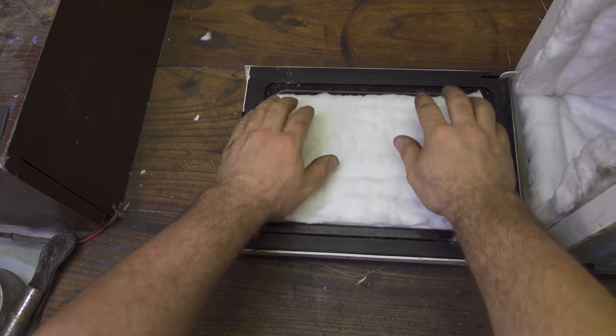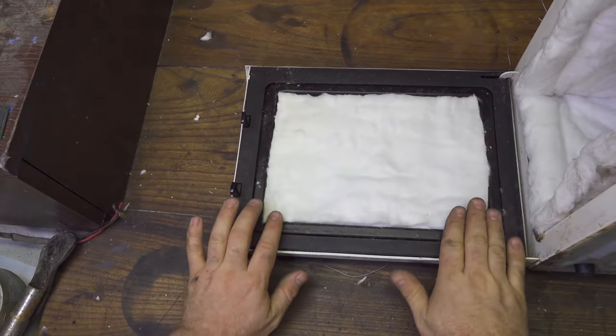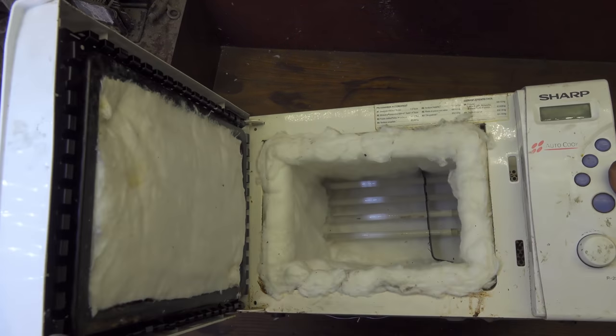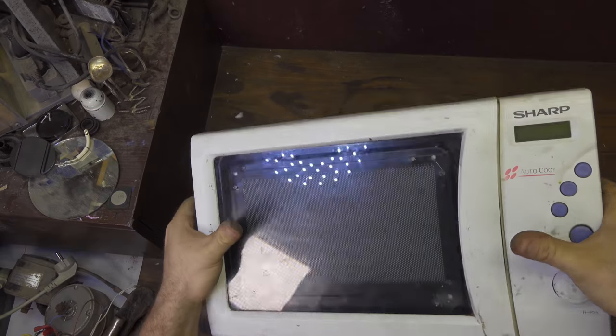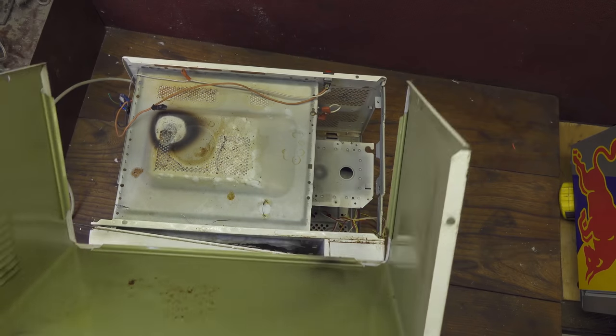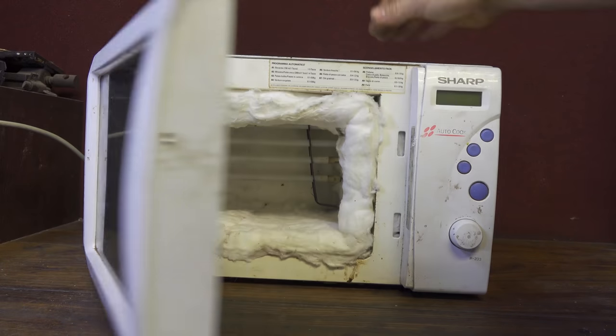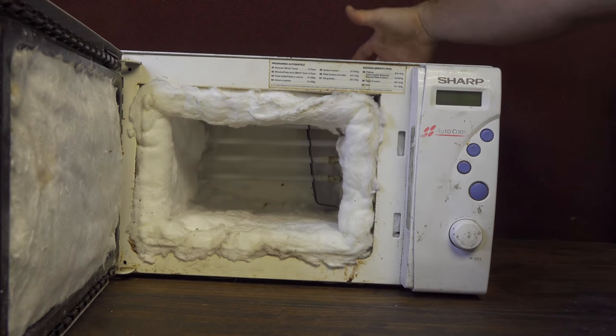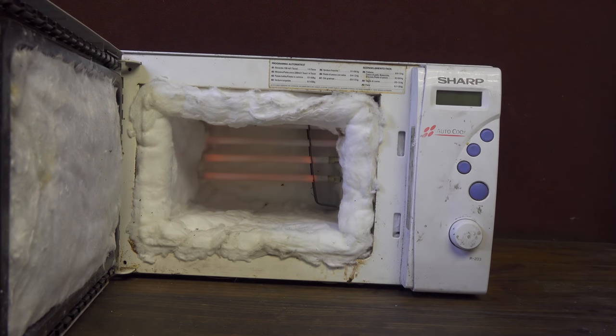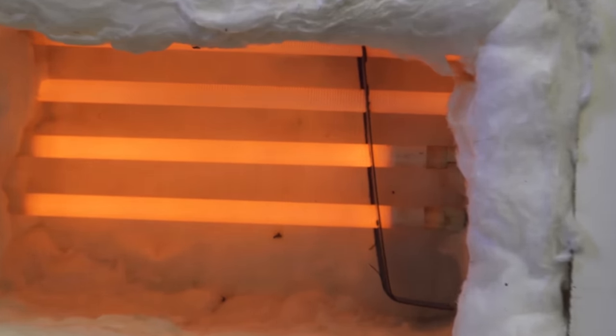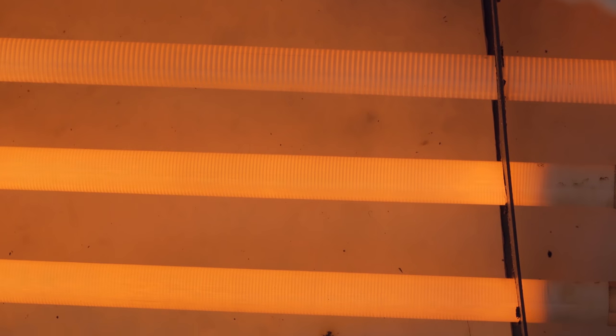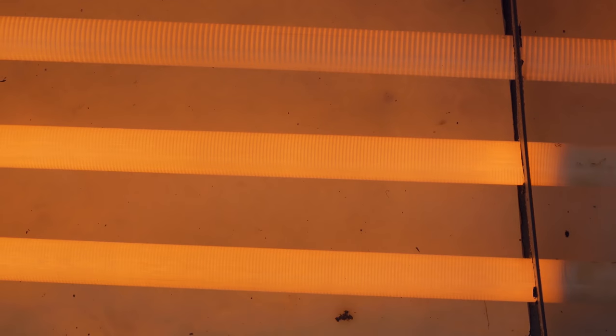I also seal the front side of the microwave. Unfortunately, I cannot use the front window anymore so I cannot see anything inside the microwave, but this is very important to keep the heat inside. So I switch on the switch and only in 10 seconds the microwave gets extremely hot. I'm almost ready to cook and melt aluminum. You can see that the heating elements are working very well, and I'm pretty sure that four are enough for my project.